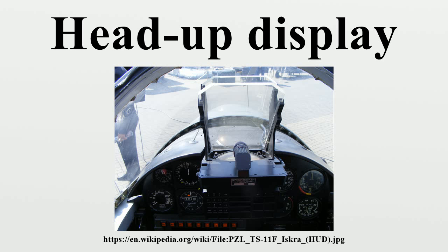HUDs evolved from the reflector sight, a pre-World War II parallax-free optical sight technology for military fighter aircraft. The gyro gun sight added a reticle that moved based on speed and turn rate to solve the amount of lead needed to hit a target while maneuvering. During the early 1940s, the Telecommunications Research Establishment, in charge of UK radar development, found that Royal Air Force night fighter pilots were having a hard time reacting to the verbal instructions of the radar operator as they approached their targets. They experimented with the addition of a second radar display for the pilot, but found they had trouble looking up from the lit screen into the dark sky to find the target.